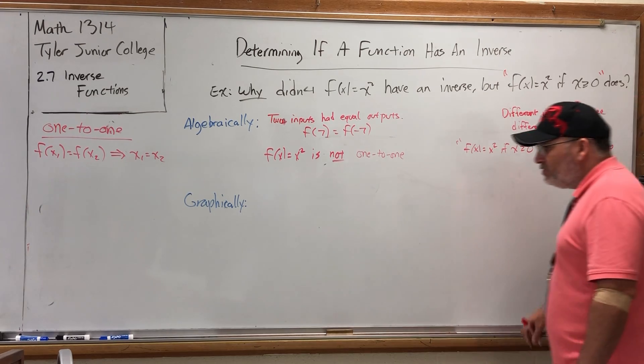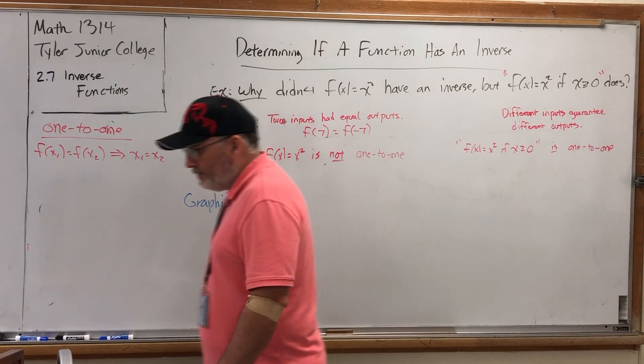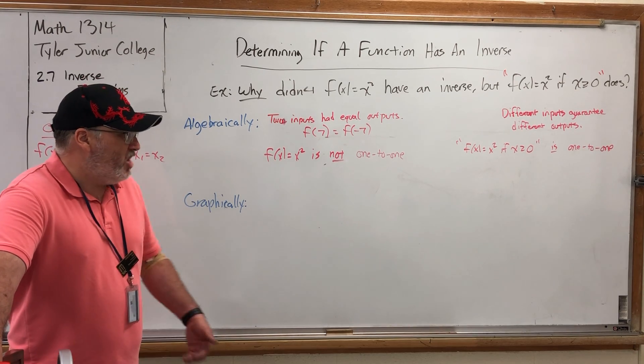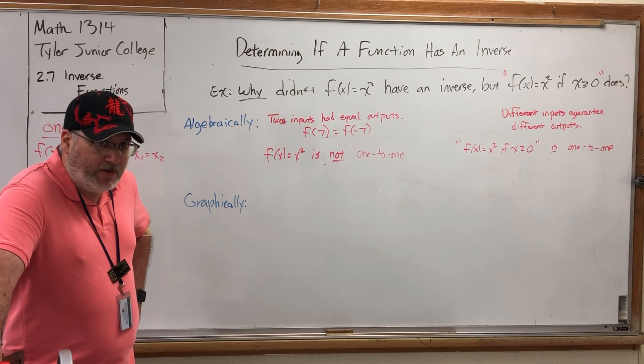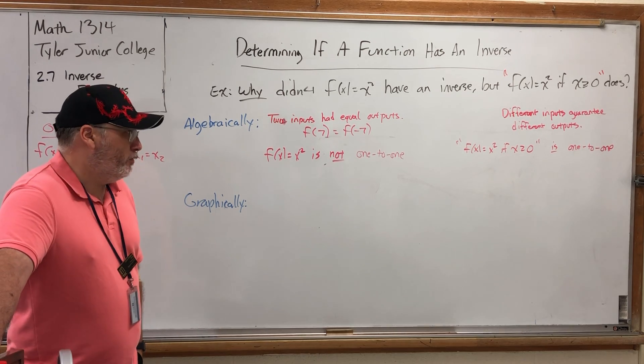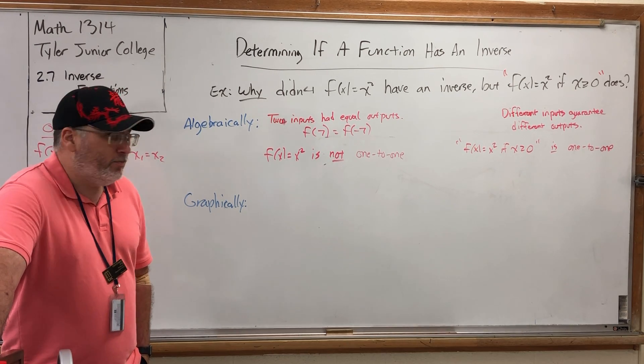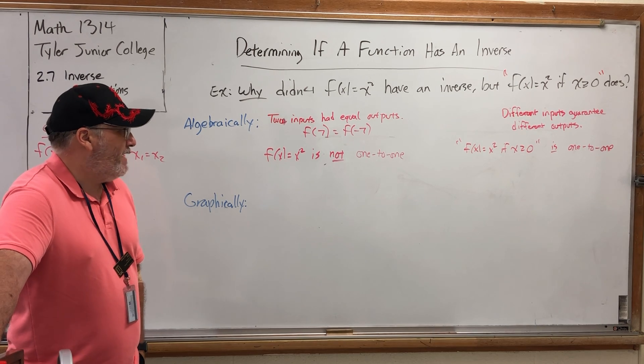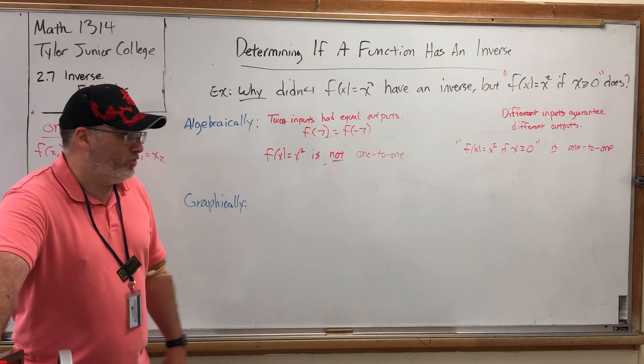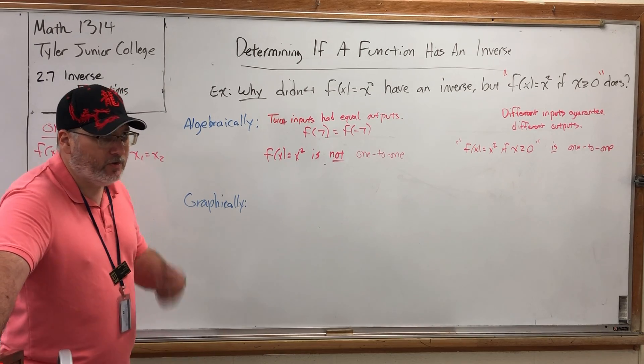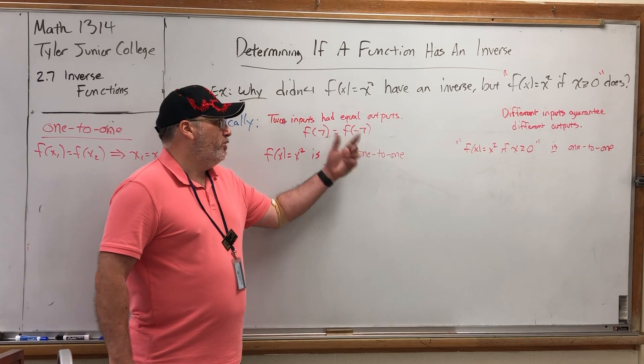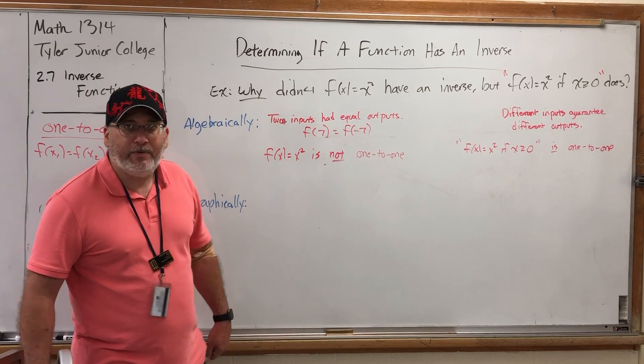Now, I will admit that proving a function is one-to-one is not something that we're going to do in this class. For those of you going into future math classes, you will be proving that functions are one-to-one. But from an algebraic perspective, that's why squaring failed to have an inverse, but squaring with the restricted domain did have an inverse. If I just say square, I can have two inputs with equal outputs, but that can't happen over there.